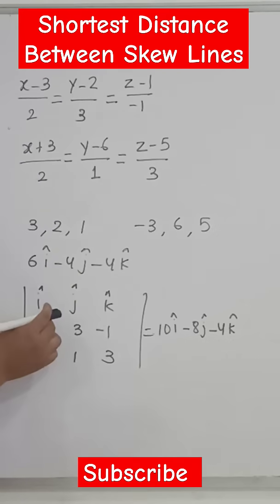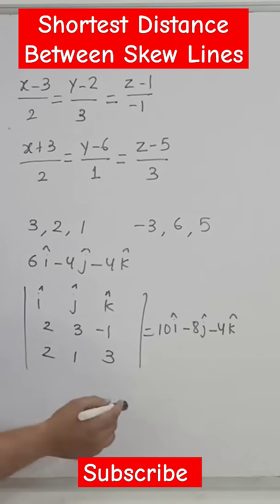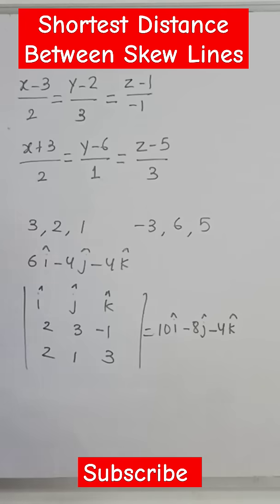Then you need to find the cross product of these two lines' direction ratios. So here 2, 3, -1 and 2, 1, 3. Then find the determinant in terms of i, j, k.